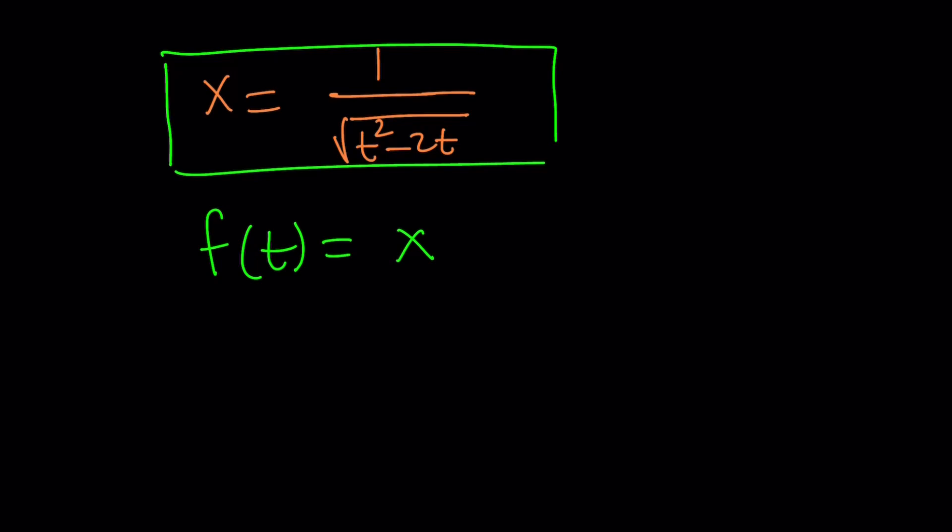So, f of t is equal to x and x is equal to this. So, I can go ahead and replace x with that. That's going to give me f of t equals 1 over square root of t squared minus 2t. So, that's my f of t.